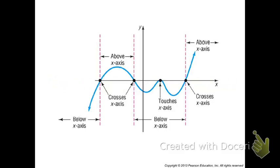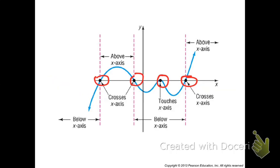A couple other things to keep in mind here. We see that these dotted lines separate parts of the graph that are important. For every x-intercept — that's what we call all these dots right here on the x-axis — to the left of one x-intercept over here, we see that the graph of the function is below the x-axis. That means that the function's values are negative. Below the x-axis means that y is negative.